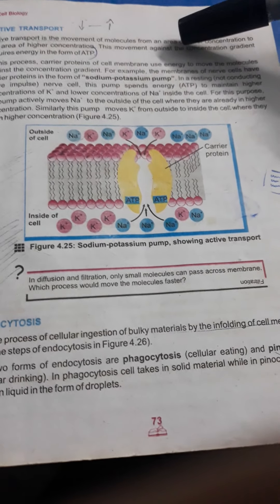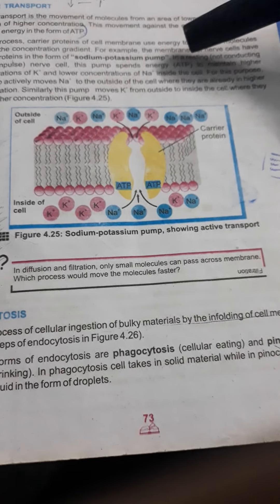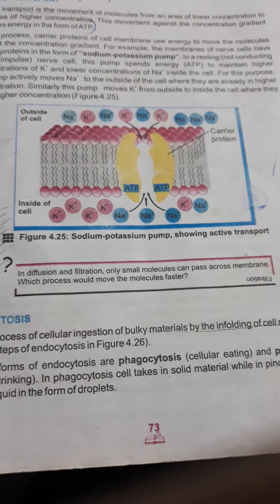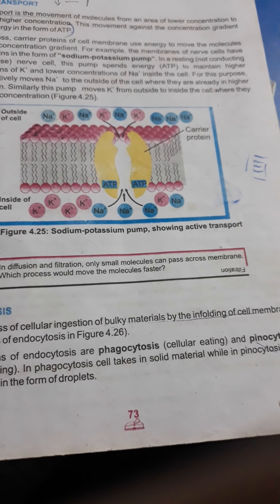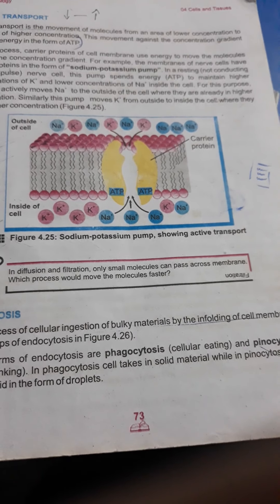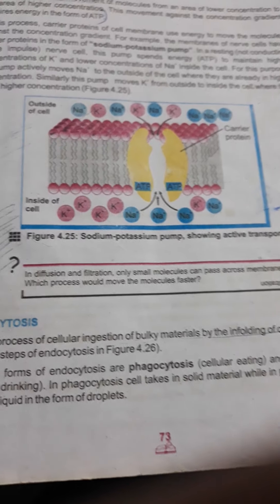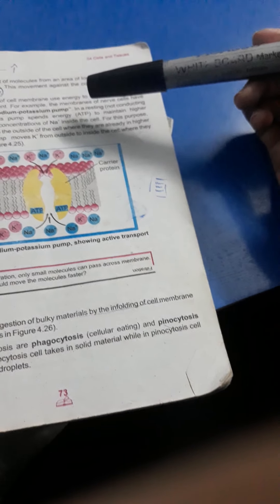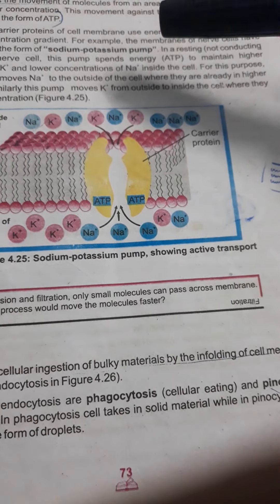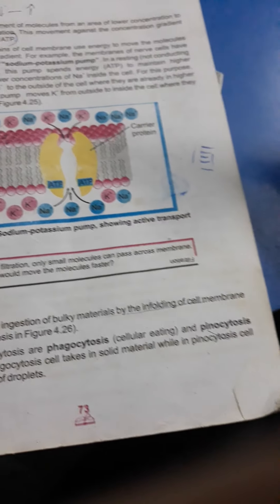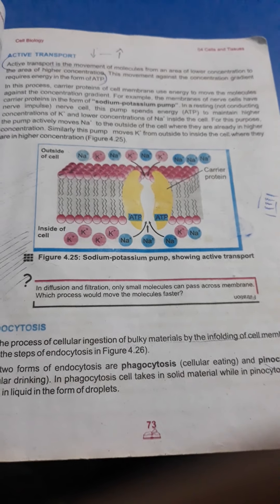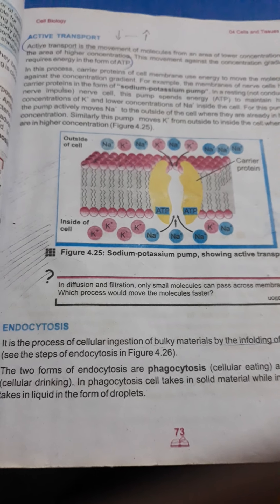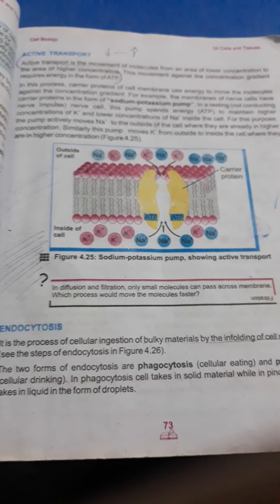For example, the membrane of nerve cells has a carrier protein in the form of a sodium-potassium pump. In the resting state — not including nerve impulse — nerve cells use this pump and energy to maintain higher concentration of potassium and lower concentration of sodium inside the cell. For this purpose, the pump actively moves sodium to the outside of the cell where it is already in high concentration. Similarly, this pump moves potassium from outside to inside the cell where it is in higher concentration. So the movement of molecules from lower to higher concentration with the help of energy — which can be in the form of ATP — is called active transport. Active means very energetic, in which energy is required.